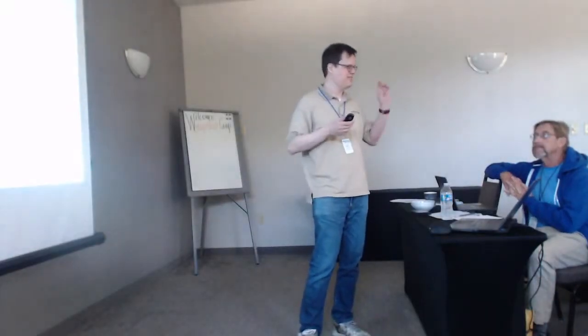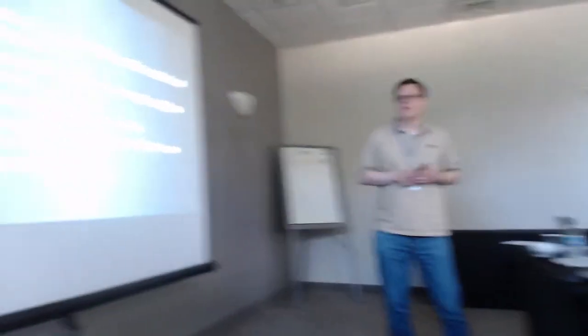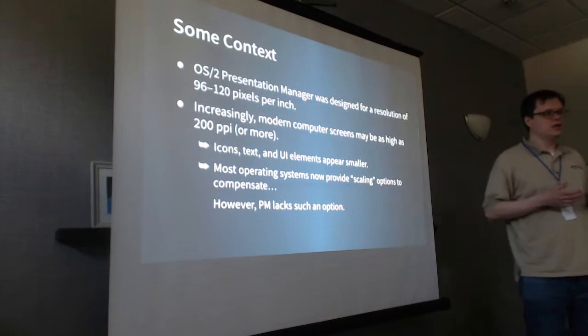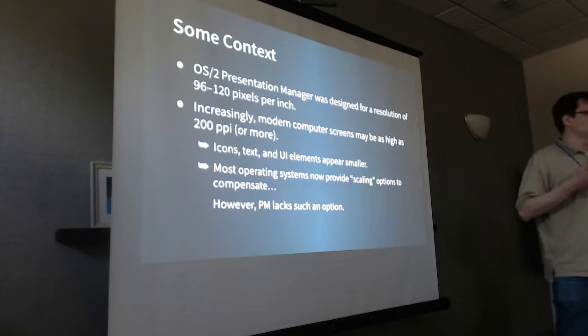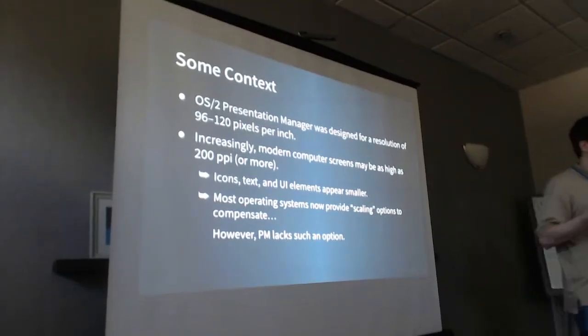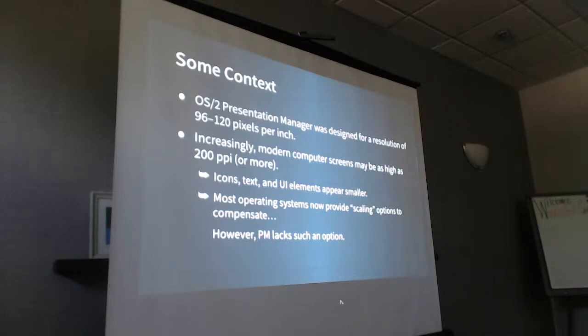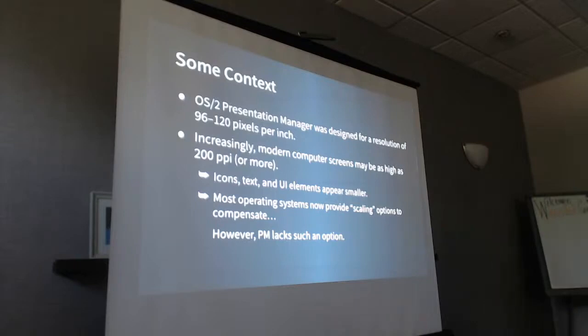Some terminology: in this context, 'high resolution' generally doesn't mean screen pixel count so much as pixel density. When OS/2 Presentation Manager was first designed, it assumed screen pixel density would be 96 or 100 DPI, which was true for most of the first 20 years of OS/2's existence. Modern screens increasingly reach pixel densities as high as 200 pixels per inch or more. This laptop, which I bought last year, is a 16-inch screen at 2560x1600 — sometimes called 2.5K — with about 190 pixels per inch. Apple's retina displays are well over 200 pixels per inch.